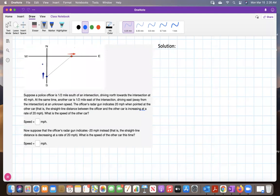Okay, so let's represent the distance between the officer's car and the intersection by x. Let's represent the distance from the driver to the intersection with y, and let's represent with z the distance between the officer's car and the driver's car.